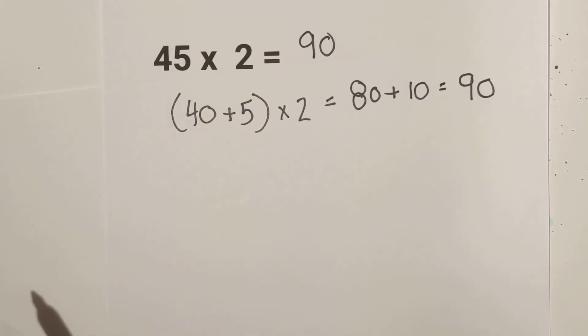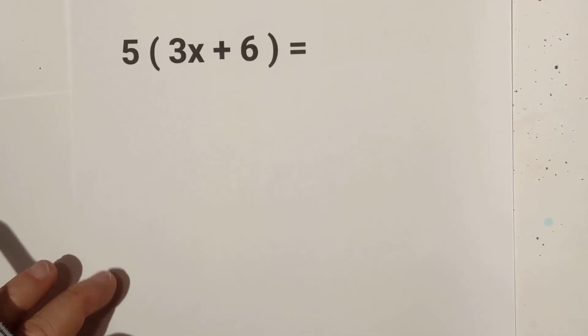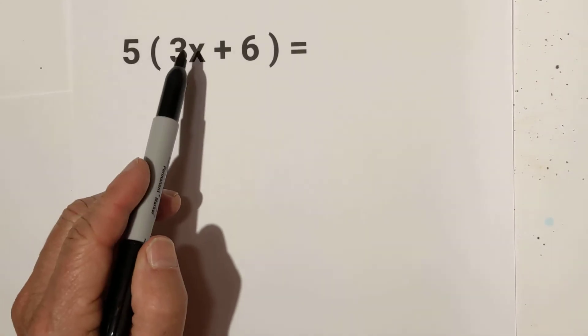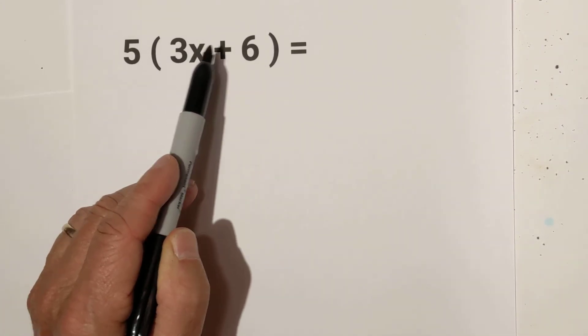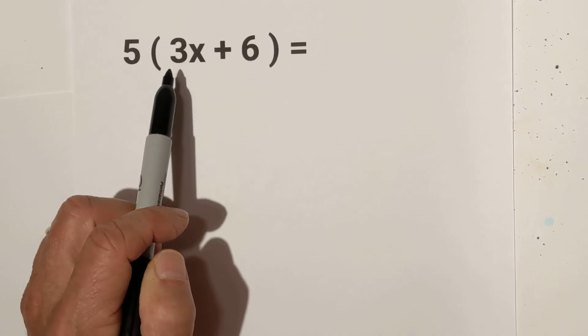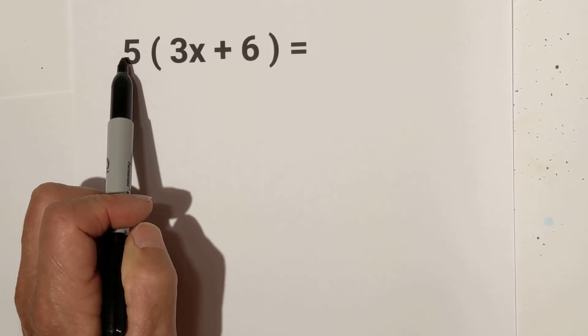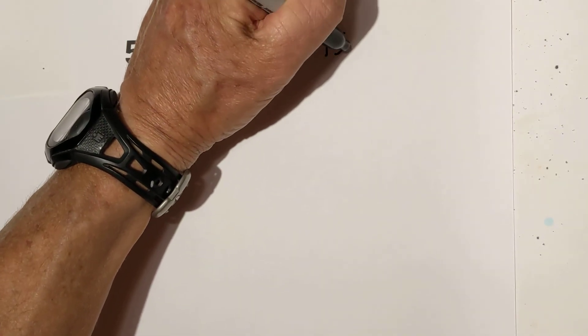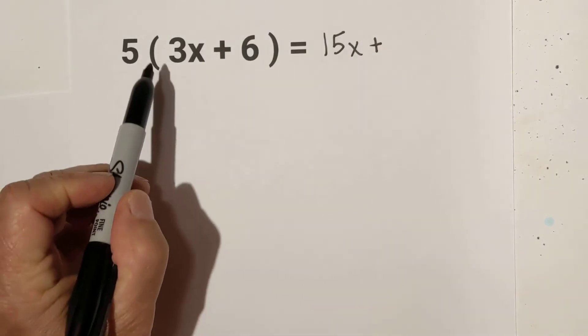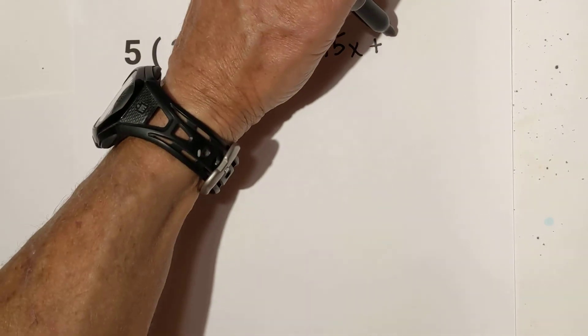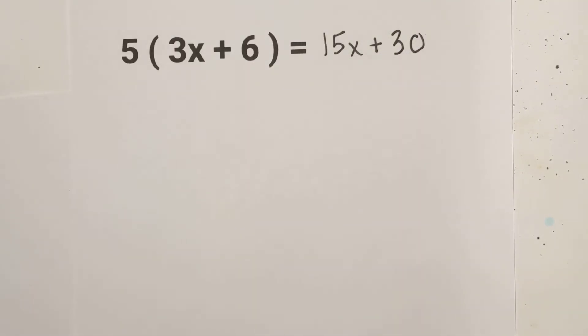Now let's look at an algebra example. In algebra, it's the same, but remember you cannot combine these together because they're unlike terms. So we distribute: 5 times 3x is 15x, plus 5 times 6 is 30.